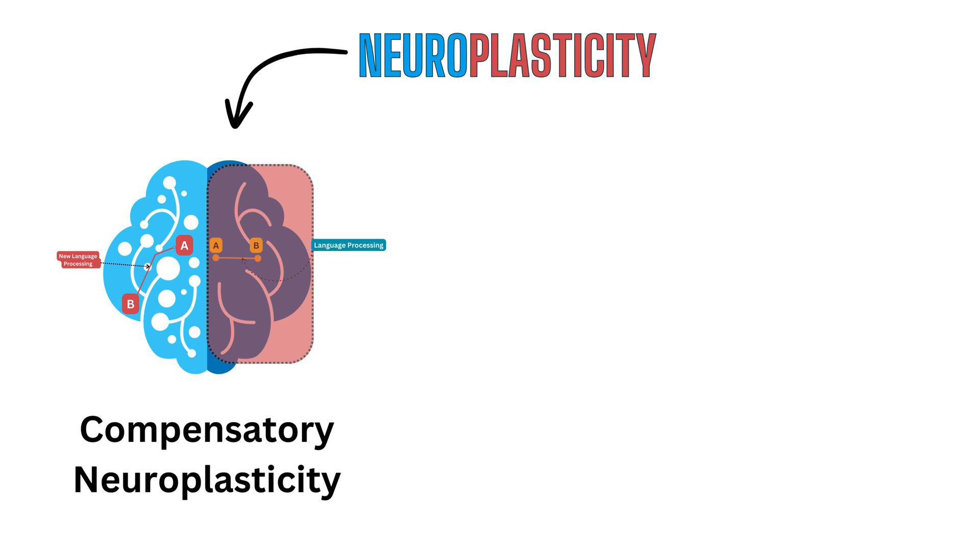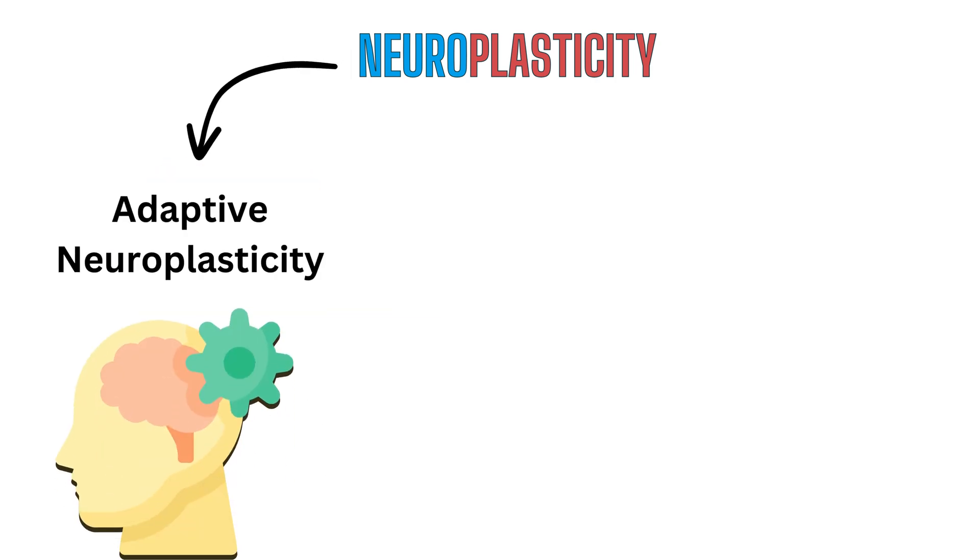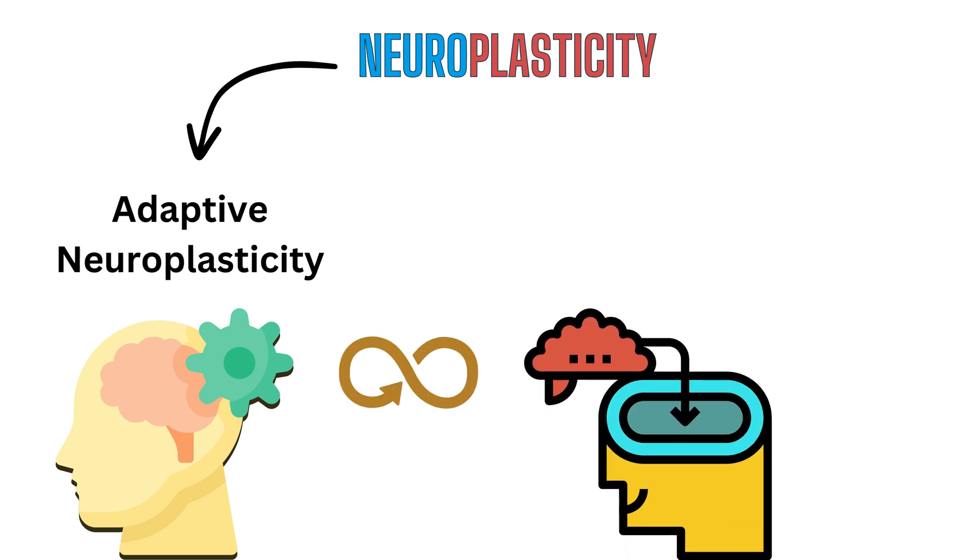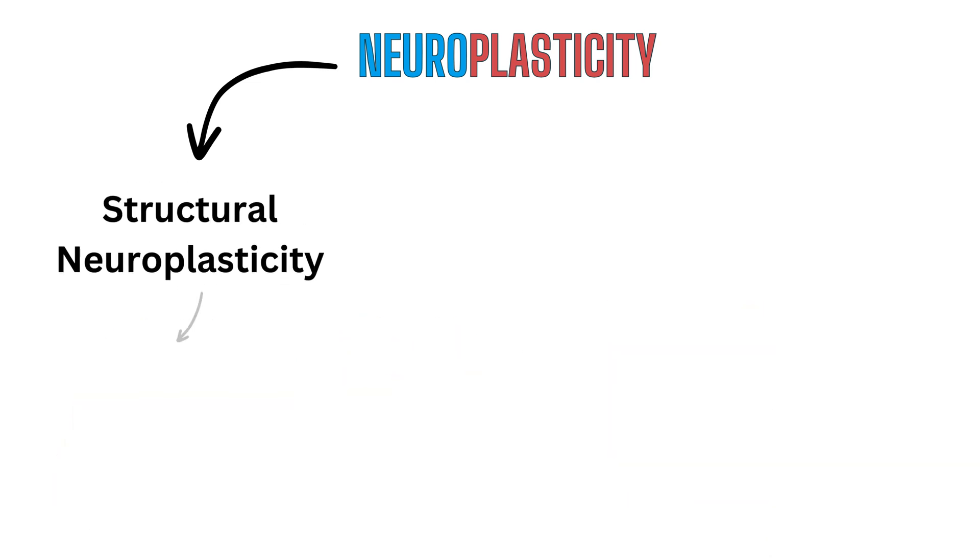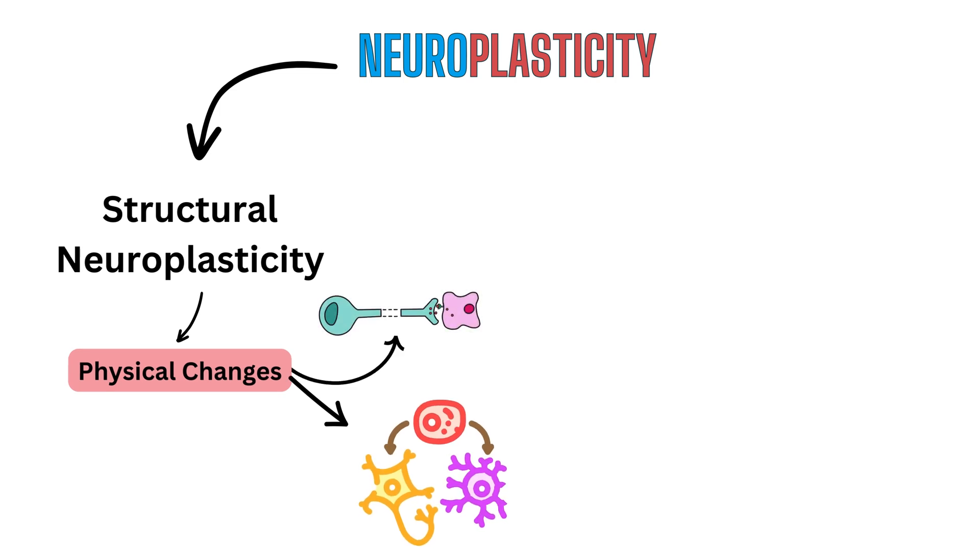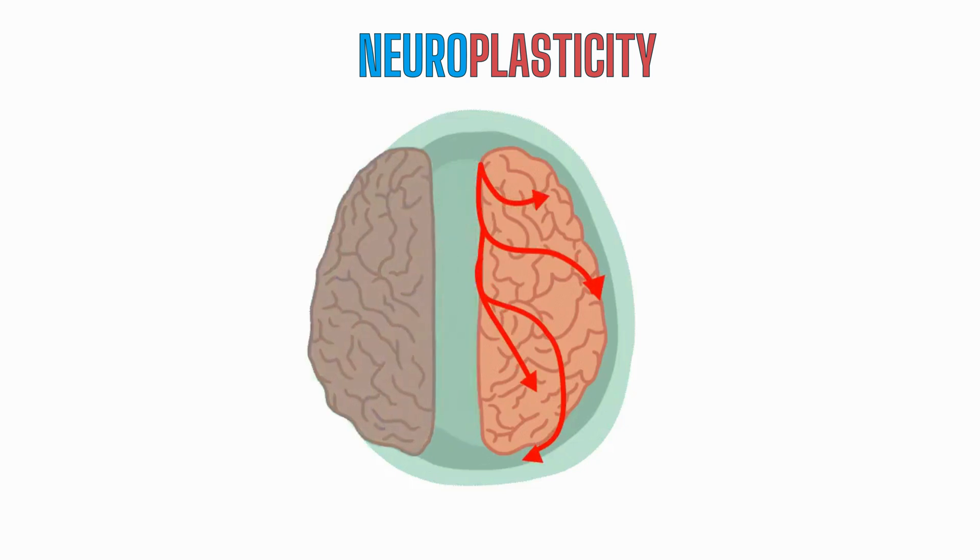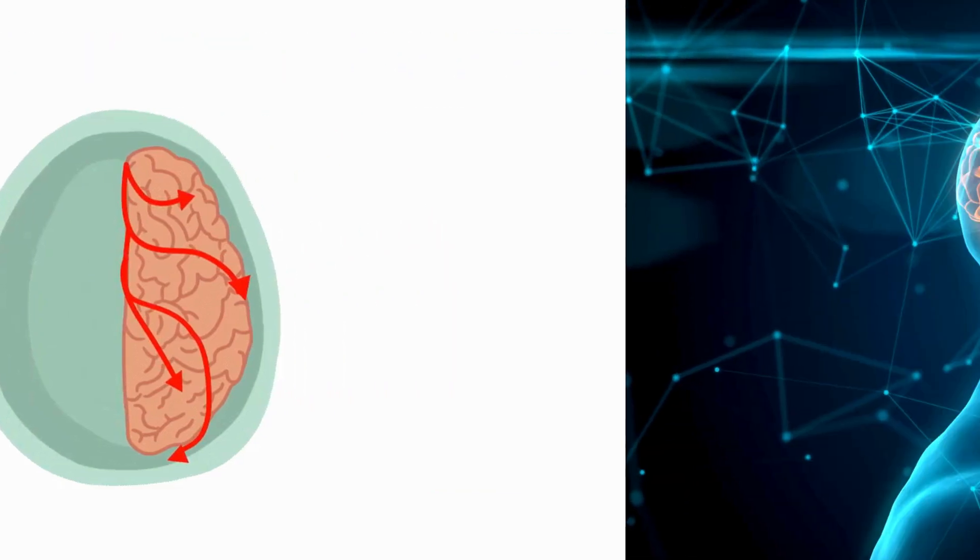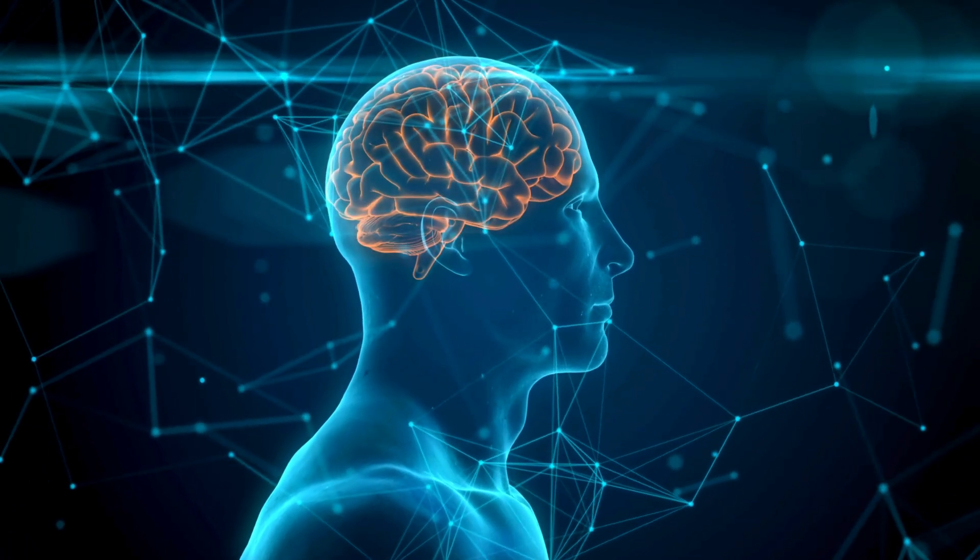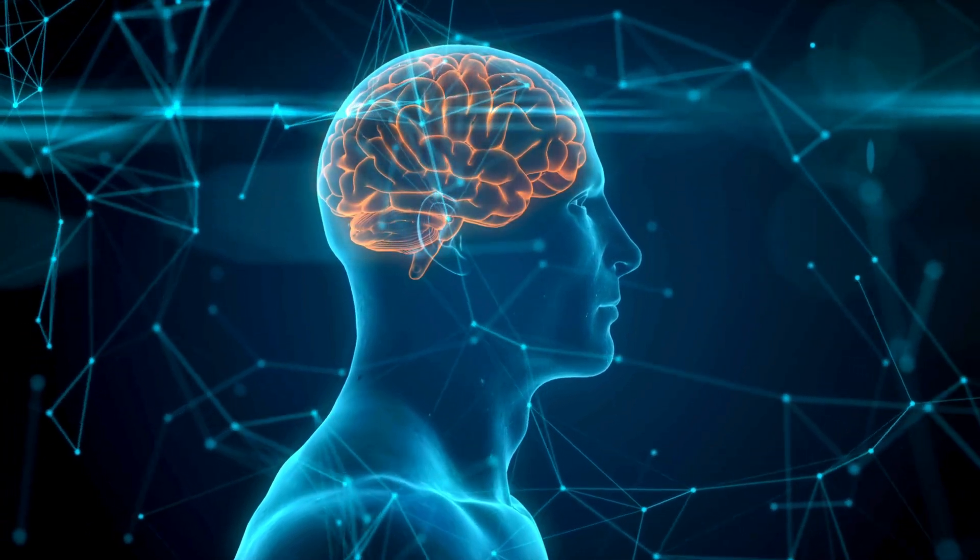But neuroplasticity isn't limited to just compensation. There are other types, too. For instance, there's adaptive neuroplasticity, which occurs when the brain adjusts its function in response to new experiences or learning. Then there's structural neuroplasticity, where actual physical changes, such as the growth of new neurons or the formation of new synaptic connections, take place. In the case of hemispherectomy, we witness a remarkable display of compensatory neuroplasticity as the brain adapts to the loss of one hemisphere by rerouting signals and reallocating functions. This incredible ability underscores the brain's resilience and its capacity to adapt to even the most challenging circumstances.